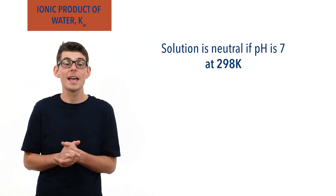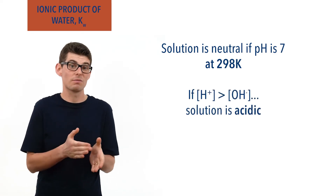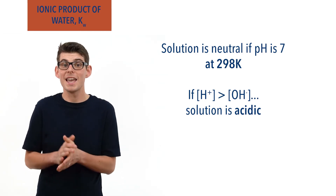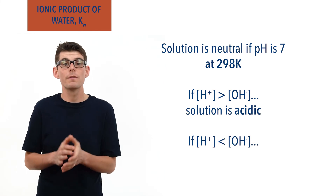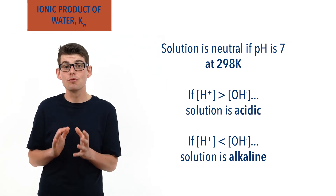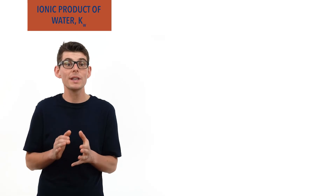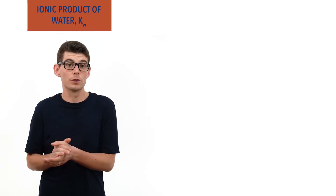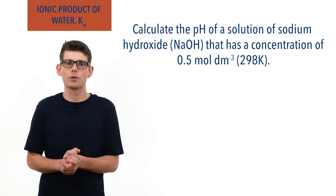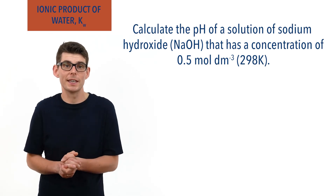Whenever we say a solution is neutral if it has a pH of 7, what we should actually be saying is a solution with a pH of 7 at 298 Kelvin is neutral. For a solution to be acidic, H plus concentration must be greater than the concentration of hydroxide ions. Equally, if concentration of H plus ions is less than concentration of hydroxide ions, the solution is alkaline. Kw can be really useful for calculating the pH of an alkaline solution when we are only given information about OH minus ion concentration. For example: calculate the pH of a solution of sodium hydroxide with a concentration of 0.5 moles per decimetre cubed at 298 Kelvin.